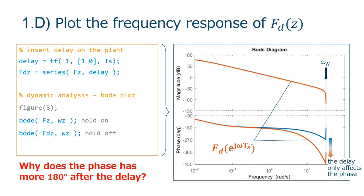I leave here a question for your reflection: Why does the phase have more 180 degrees after the inclusion of one sample delay at the Nyquist frequency?